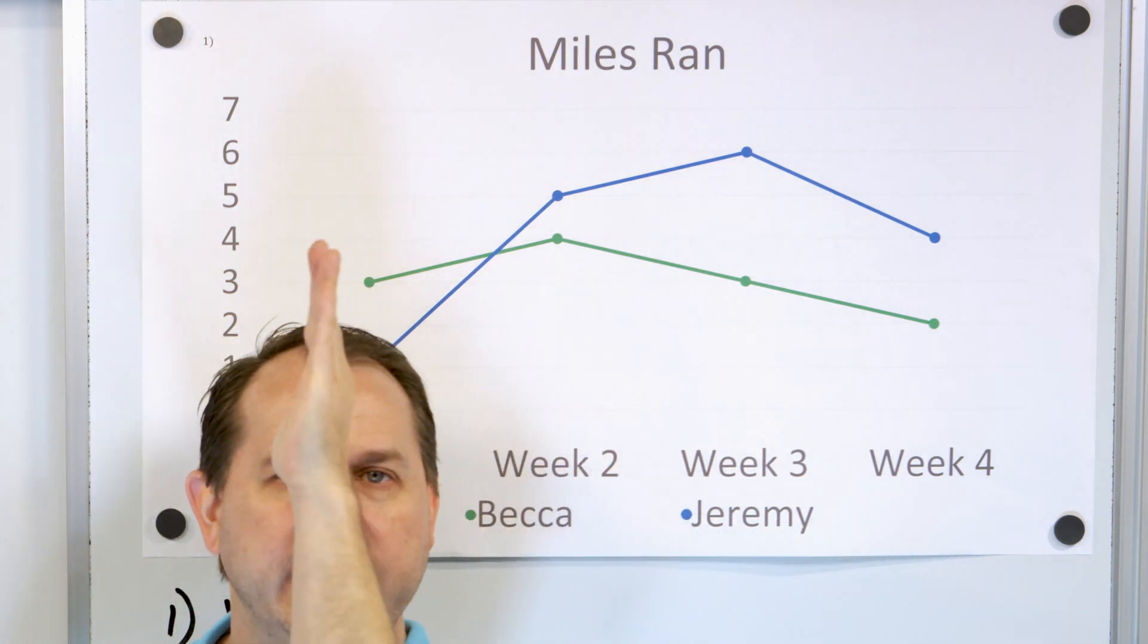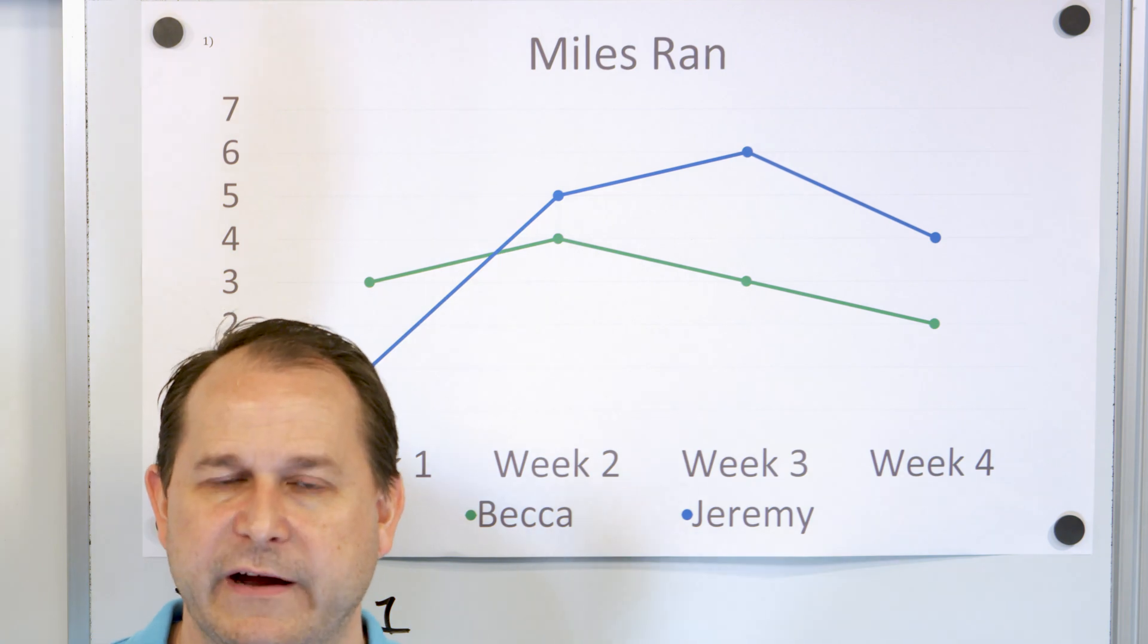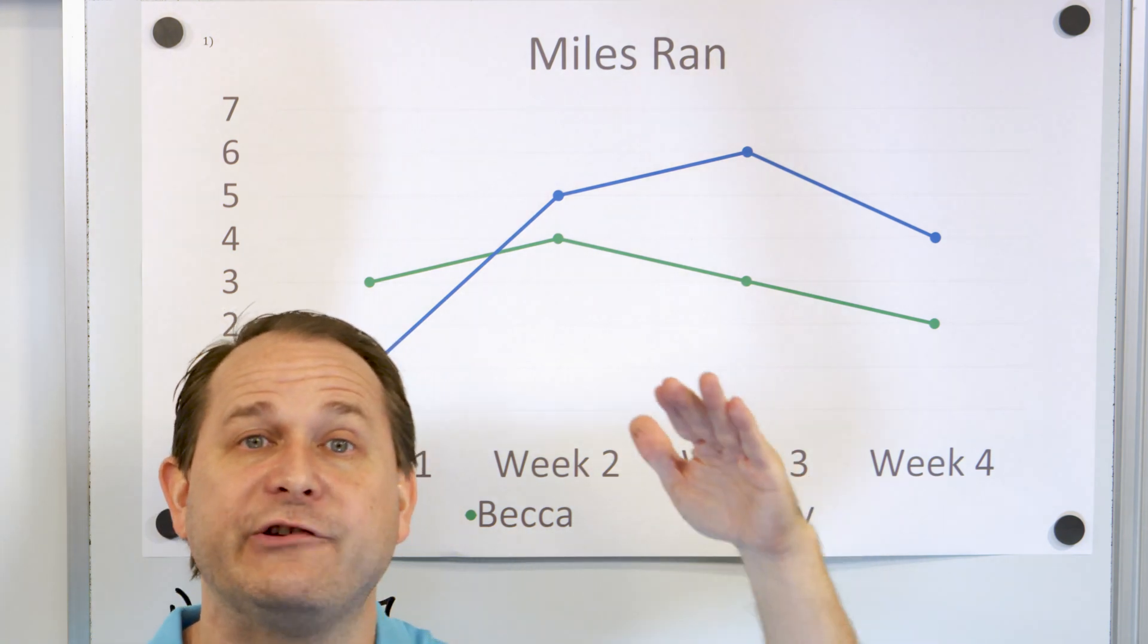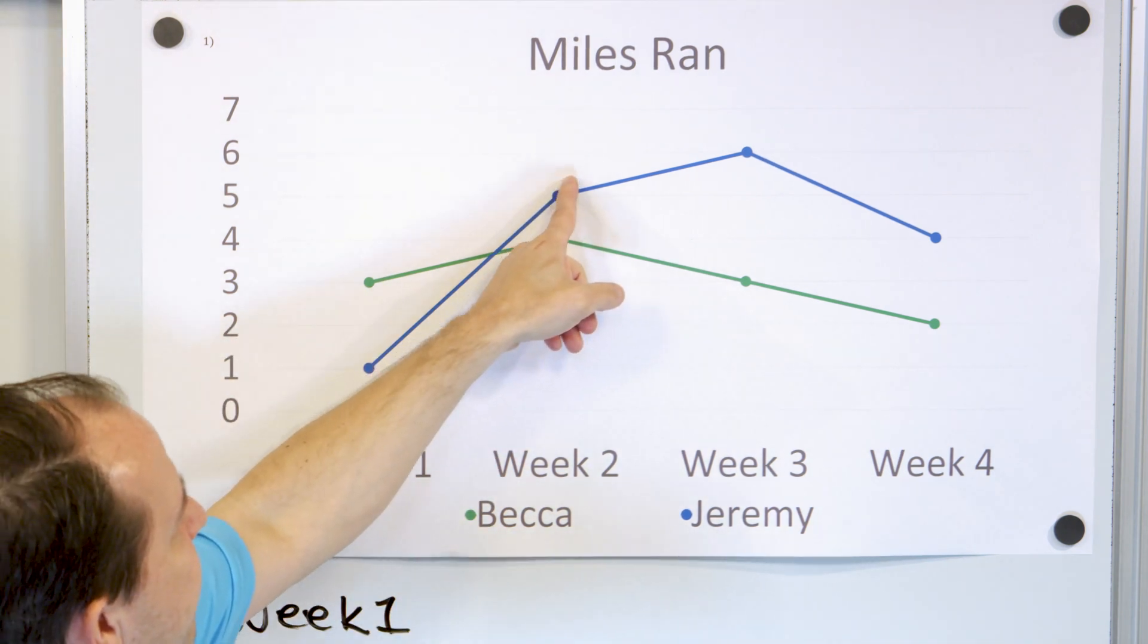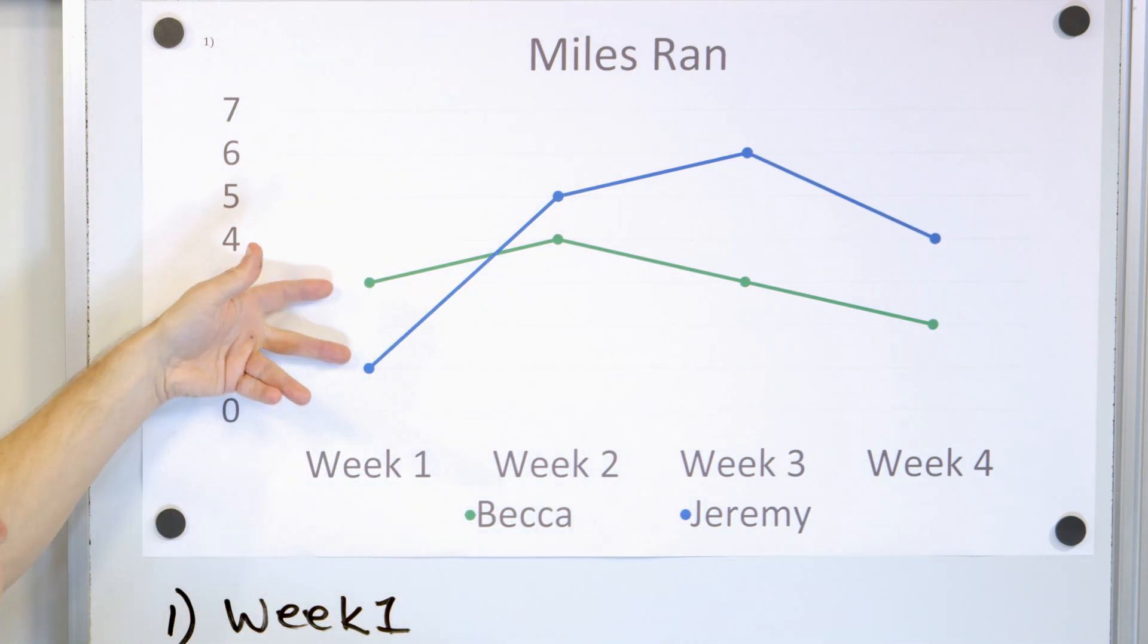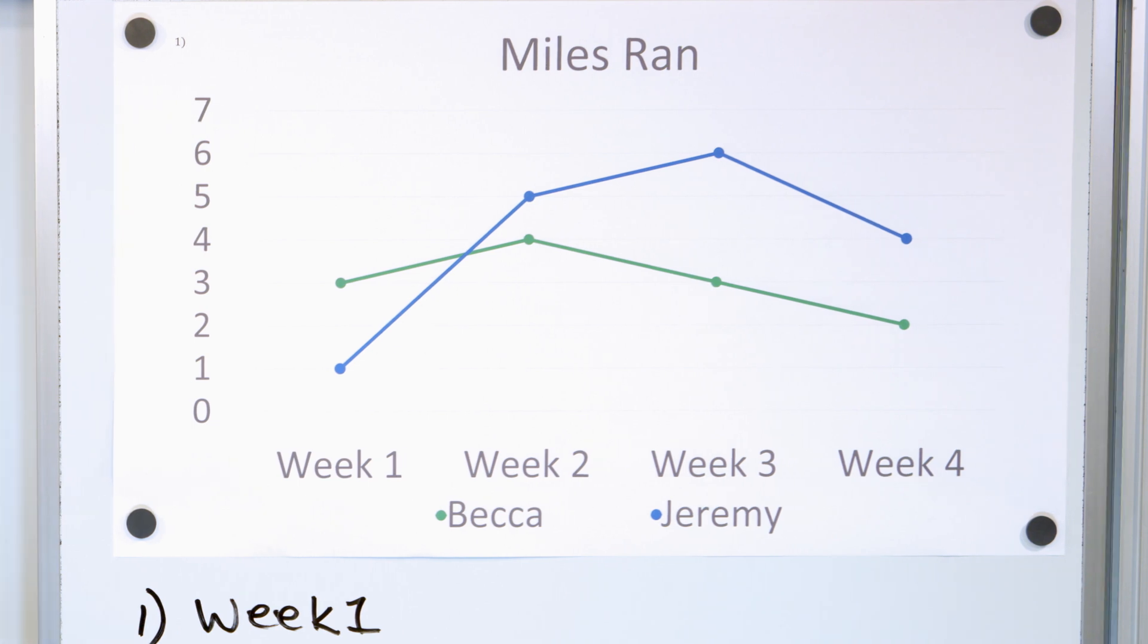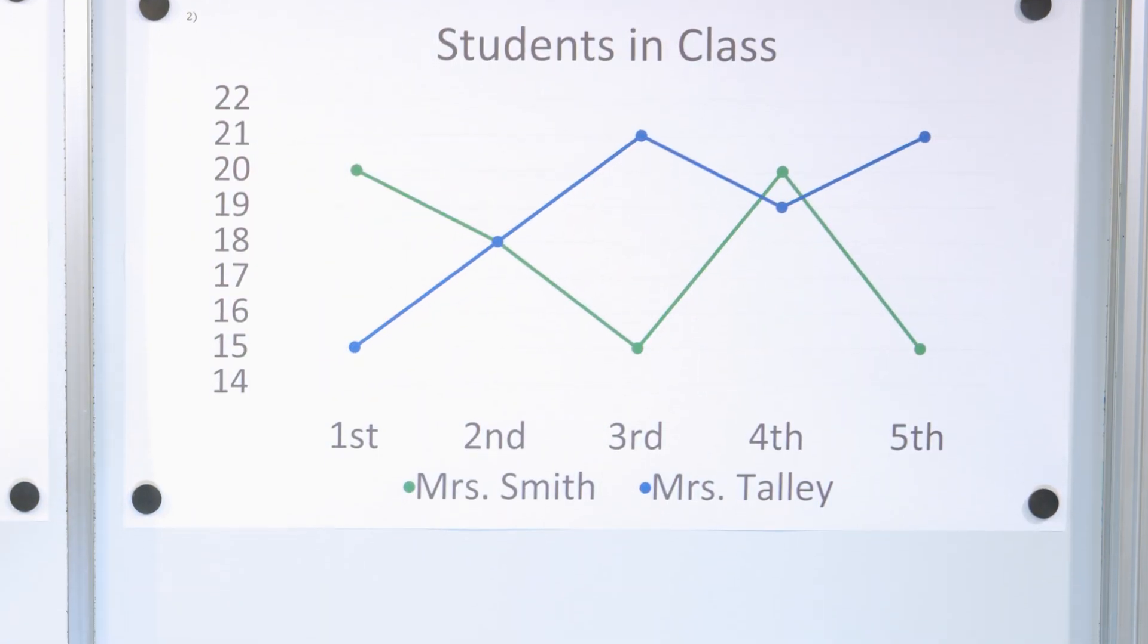And so if you isolate it to week one and two and three, and just look at what's happening on those weeks, then it makes more sense. And you can use the connection of the lines to get an idea of the trend. You can see that in general, Jeremy runs more often or more miles than Becca, but of course, there's an exception to that over here on week one, and so you can use it to identify trends. All right, let's take a look at graph number two.